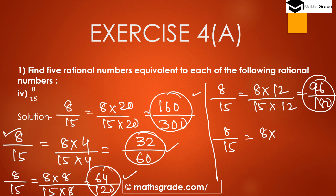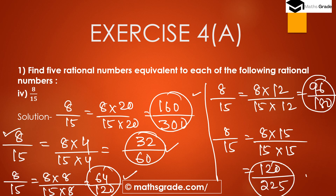For the fifth, multiplying 8/15 by 15: 8×15 = 120 and 15×15 = 225, giving 120/225. So the 5 equivalent rational numbers of 8/15 are: 160/300, 32/60, 64/120, 96/180, and 120/225.